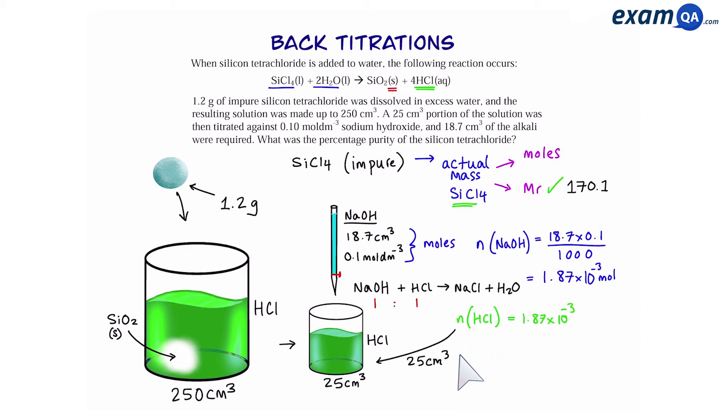Now this is in the 25 cm³ sample. Our original sample was 250 cm³. That means we have to times the moles by 10, giving us 1.87 times 10 to the power of minus 2.